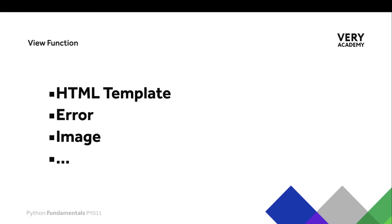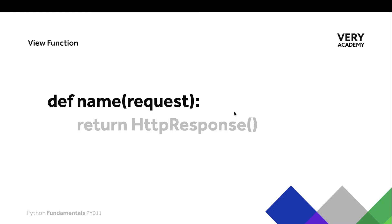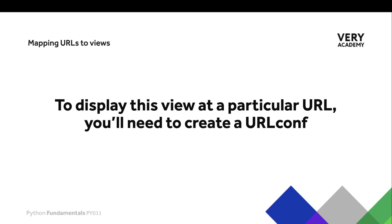In addition to returning an HTML template, Django may also return an error, an image, or other data to send back to the user. To recap: a Django view is essentially just a function, but it takes in one argument — we need to define one parameter called 'request' — and we need to return an HTTP response. Django provides the HTTP response tool, whether we use the simple HttpResponse function, the render function to render a template, or many other methods.